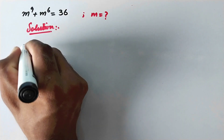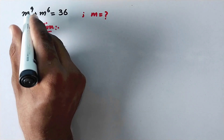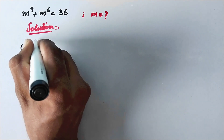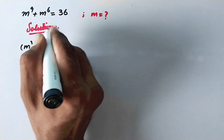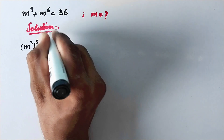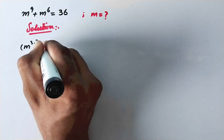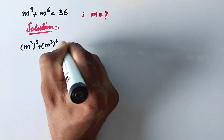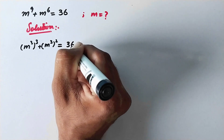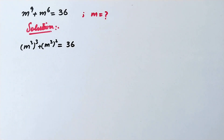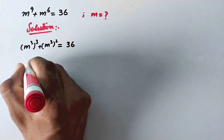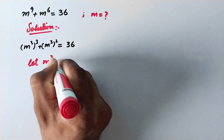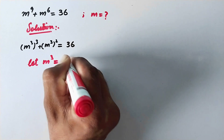In the first step, we can write m raised to the power 9 as m raised to the power 3, and m raised to the power 6 as m raised to the power 3, raised to the power 2, is equal to 36. Here we will let m to the power 3 equal to t.